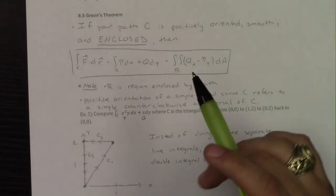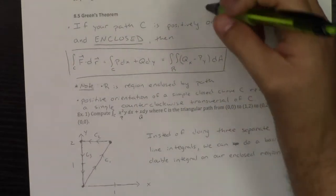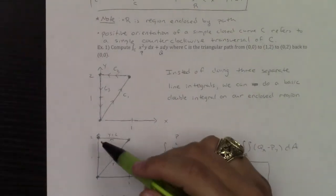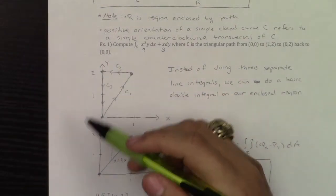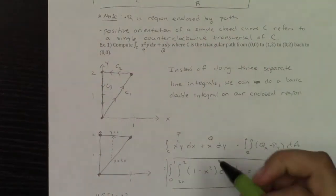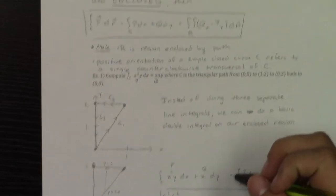Now the whole thing with positively oriented means that it's going counterclockwise. Notice how this is going counterclockwise. If your path is going clockwise, if your path is going in the other direction, all you need to do is just put a negative in front of it.